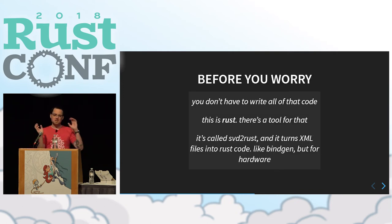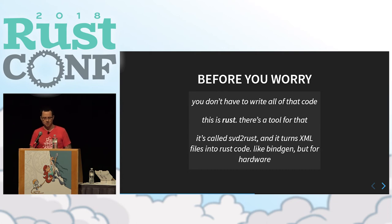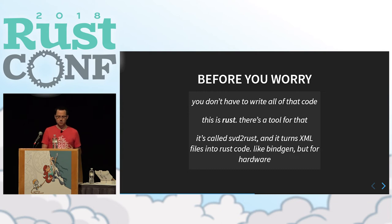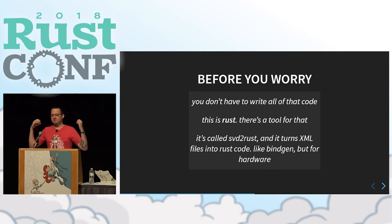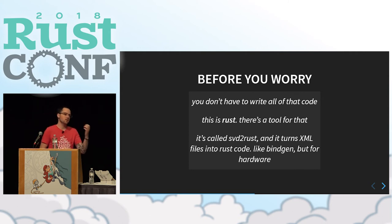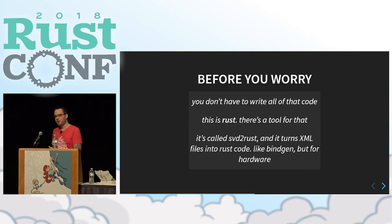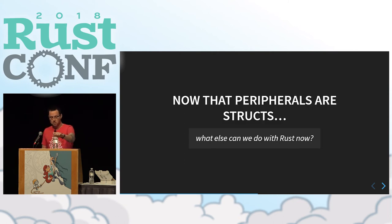Before you worry about writing all those registers - which is a lot of code when you have to handle every feature of a microcontroller - this is Rust and it's 2018, there's a tool for that. It's called SVD2Rust, and it takes XML files provided by the manufacturer that have every register, every value, everything like that, and it generates tens or hundreds of thousands of lines of usable Rust code, with comments, with modules, nicely laid out. It's kind of like BindGen, but for hardware. So now that peripherals are structs, what else can we do with Rust?